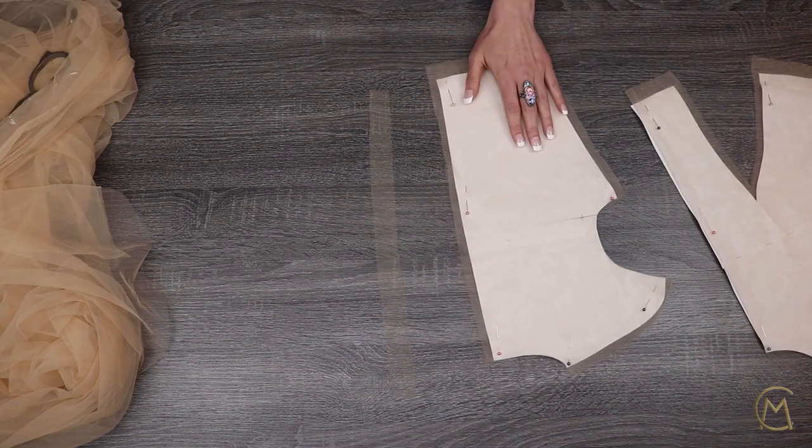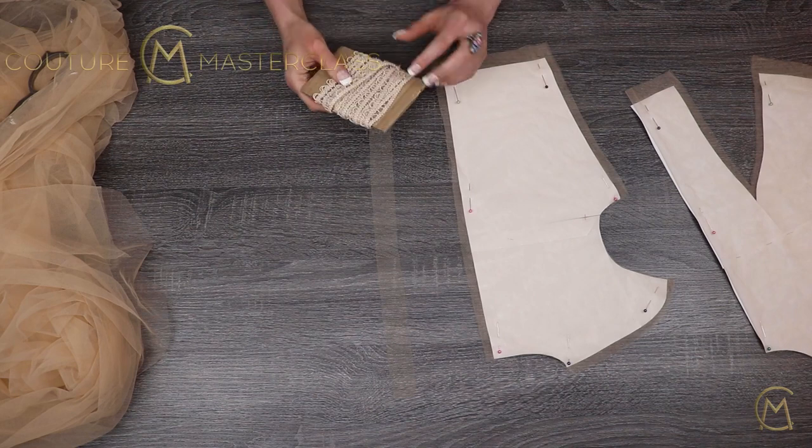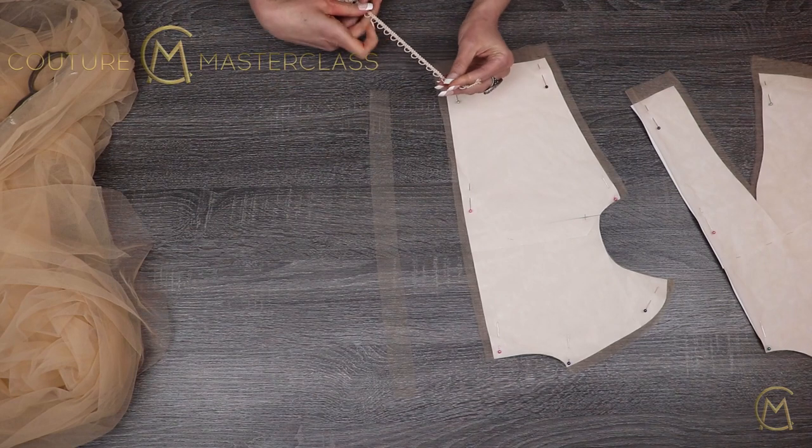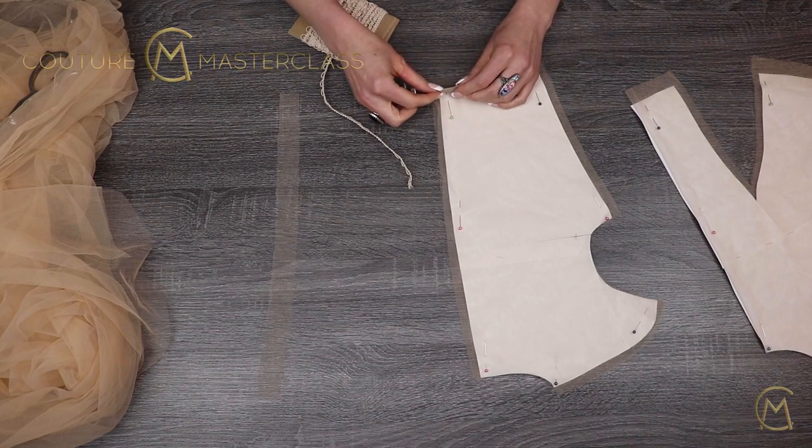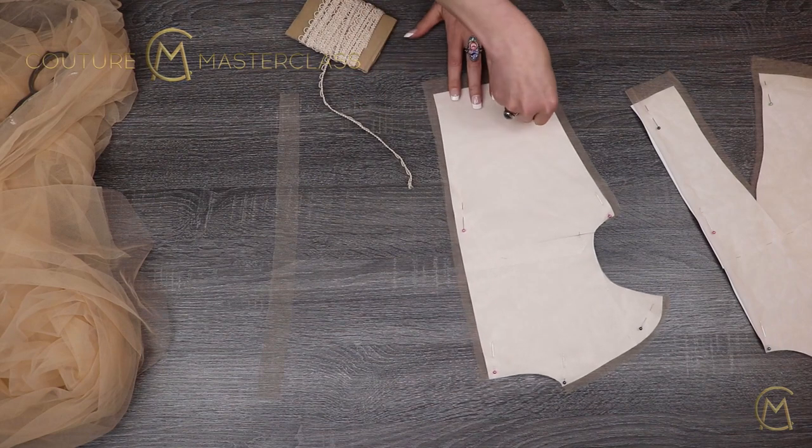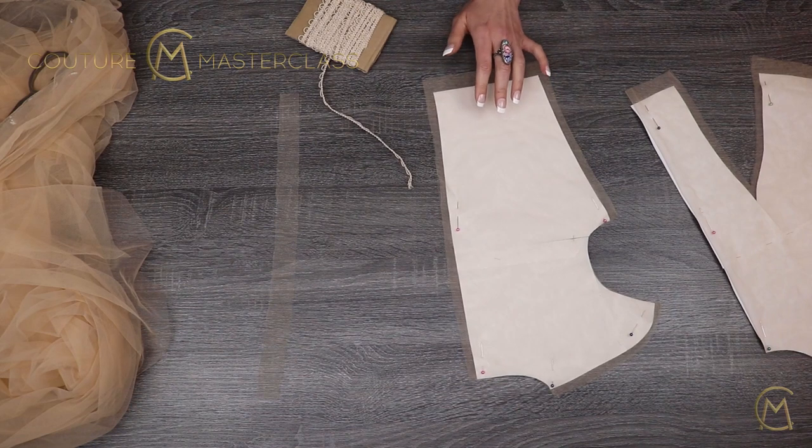Next we will be sewing on a loop tape for our buttons. Illusion mesh does not have a front or face side. It is exactly the same on both sides.